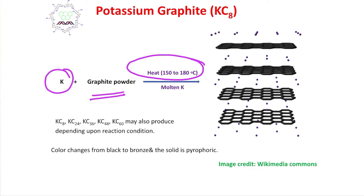At this temperature, potassium gets molten since its melting point is not that high. This potassium goes in between the layers of graphite.